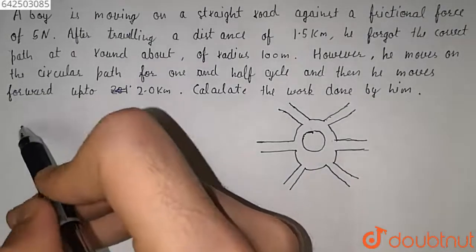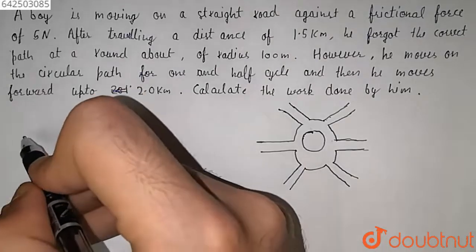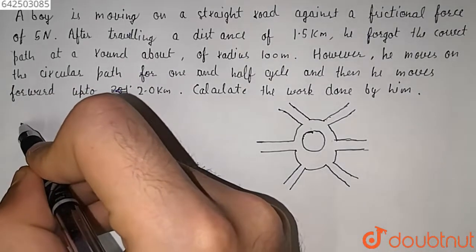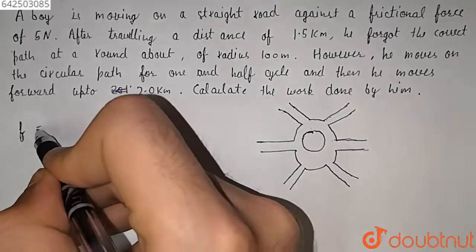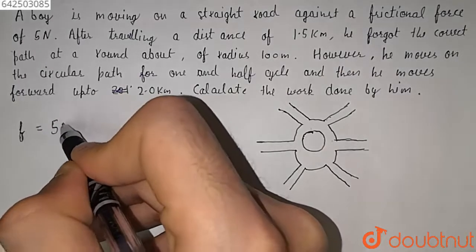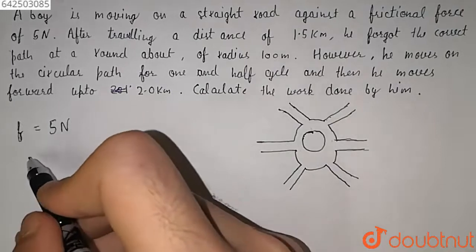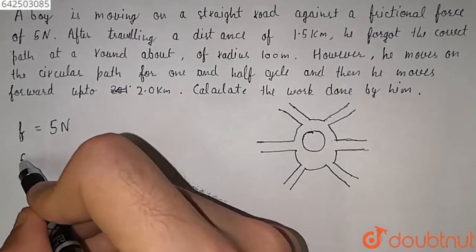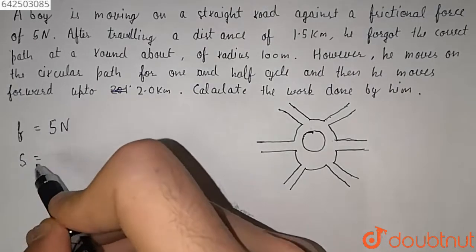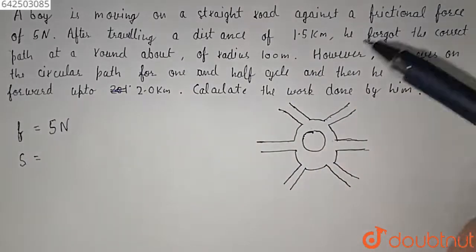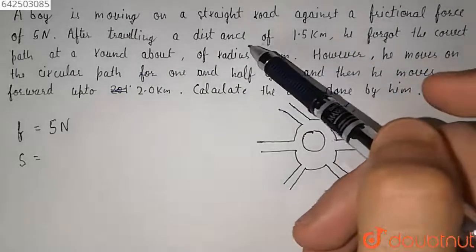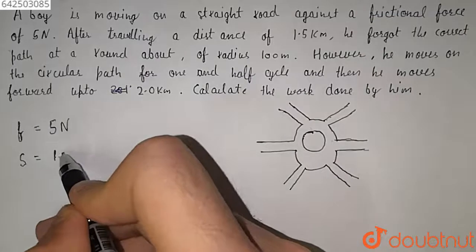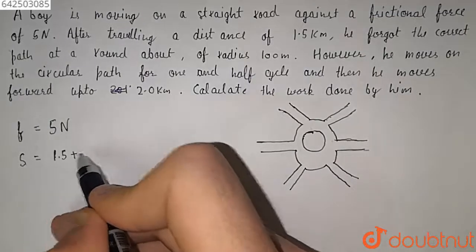So in this question, we have given the frictional force, that is f, which is equal to 5 Newton. And the total distance that is covered by the boy, that is S, which is equal to: first he travels the distance of 1.5 kilometers, so that is 1.5, then plus